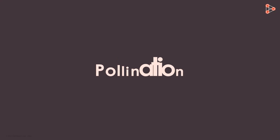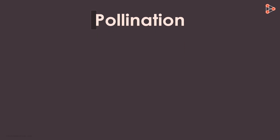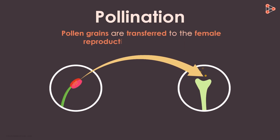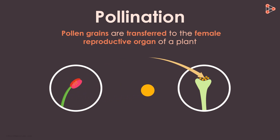Now getting back to the process, the first step is that of pollination. It is the process by which pollen grains are transferred to the female reproductive organs of a plant. In other words, pollen from the anther are transferred to the stigma.